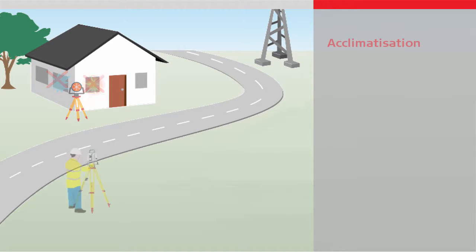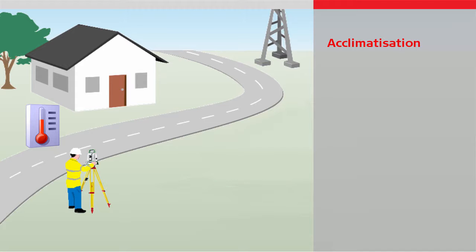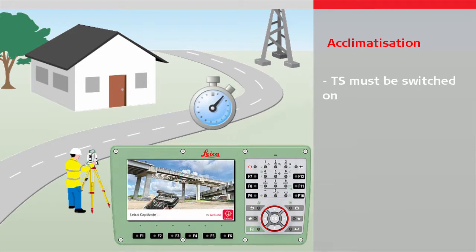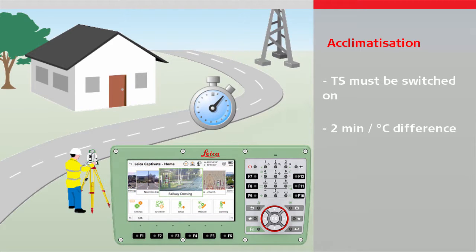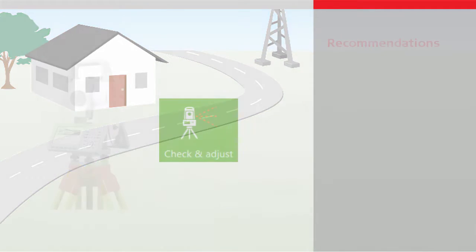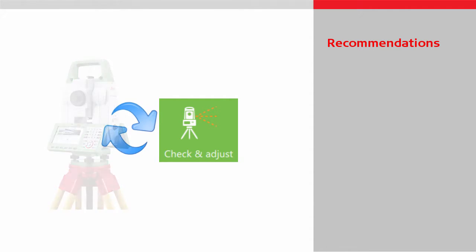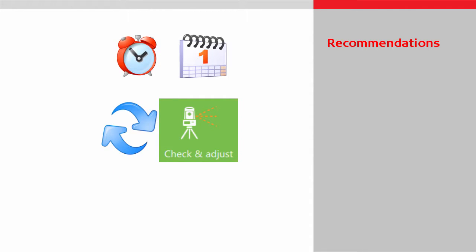Before starting one of the calibration routines, the instrument must be acclimatised to the ambient temperature. The instrument must be switched on and needs approximately two minutes per degree Celsius difference to acclimatise, with at least 15 minutes to minimise a heating-up drift. To guarantee the highest precision during daily work, we recommend calibrating the instrument on a regular basis, every three to six months.